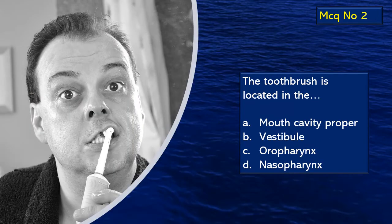Here is a photograph of a person holding an electric toothbrush. The tip of the toothbrush is in a particular location. Identify that location. There are choices. Think over and give your answer. The tip of the toothbrush is located where?